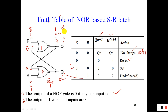Just observe — when the value of Q was 0, if the value of S equals 1, then it will set the circuit, giving output Q equal to 1. This is the Set condition.